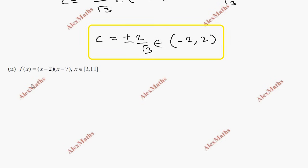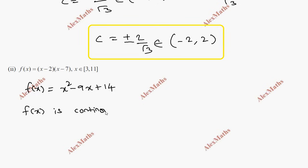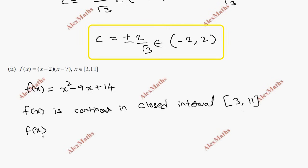For the second part, the polynomial function is f(x) = x² - 9x + 14. Since it is a polynomial function, f(x) is continuous in the closed interval [3, 11], and differentiable in the open interval (3, 11).